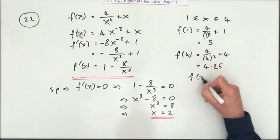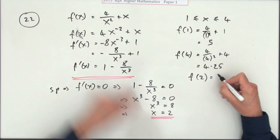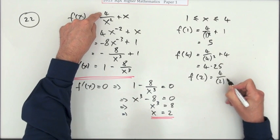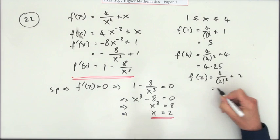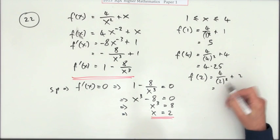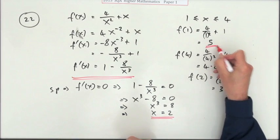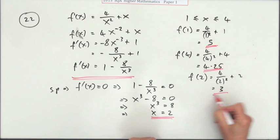Only one more thing to test. What happens at 2? That'll be 4 over 2 squared plus 2. 4 over 4 is 1, plus 2 is 3.